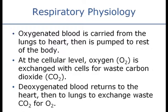At the cellular level, oxygen is exchanged with cells for waste and carbon dioxide. That deoxygenated blood returns through veins to the right side of the heart, which pumps it to the lungs. Gas exchange takes place in the lungs, and then freshly oxygenated blood is pumped from the lungs to the left side of the heart, where the left ventricle pumps it to all parts of the body so oxygen can come off and carbon dioxide can be picked up.